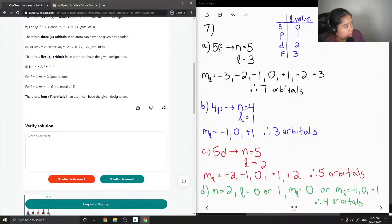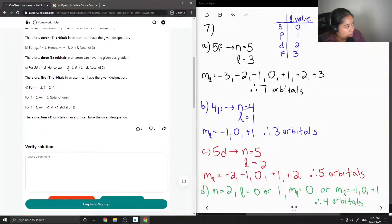For 5d, l is equal to two. Hence, ml is equal to negative two, negative one, zero, positive one, or positive two. Total of five.